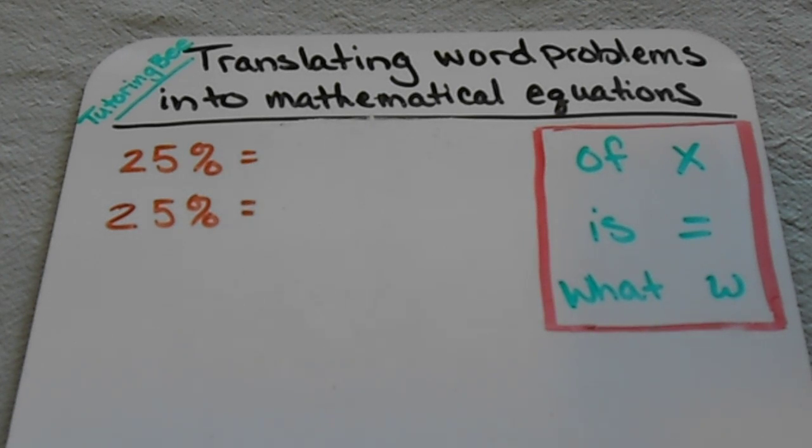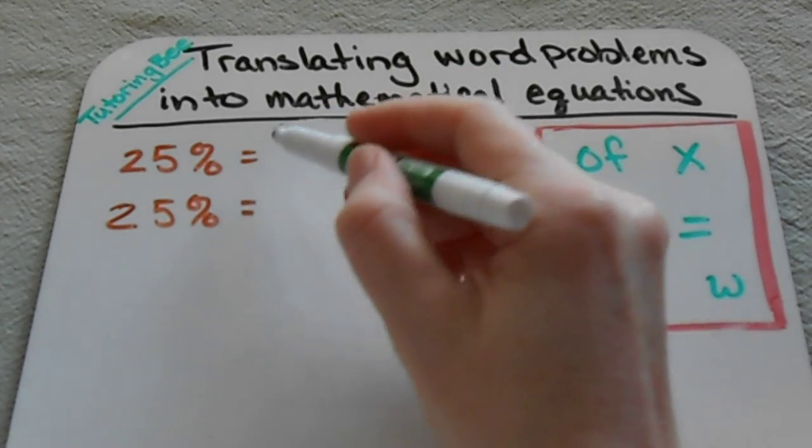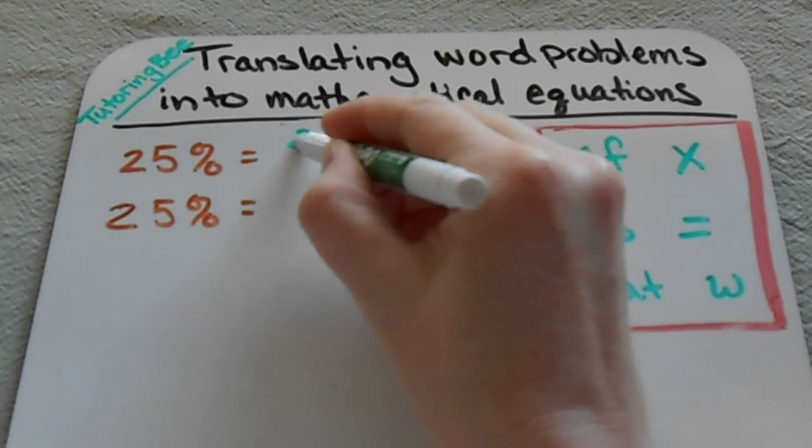This one's about translating word problems into mathematical equations when we're dealing with finding percentages of numbers. So I'm going to just go over really quickly the percentages. Remember, a percent just means out of 100.